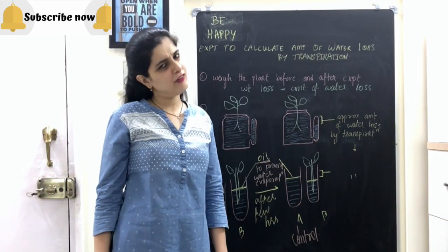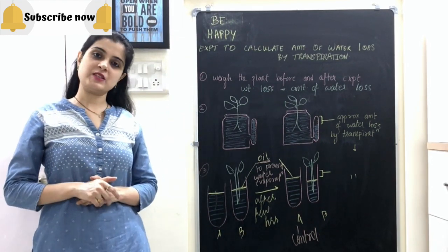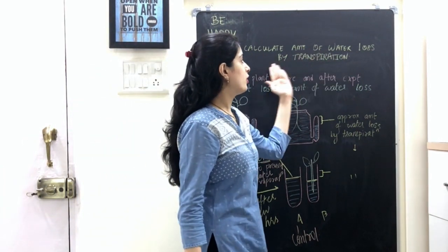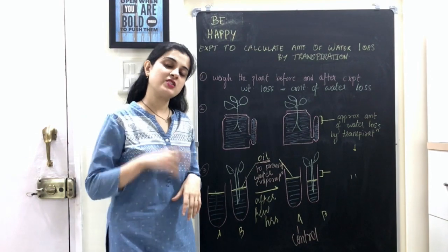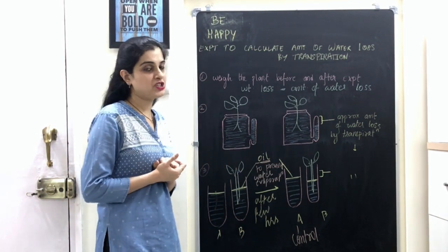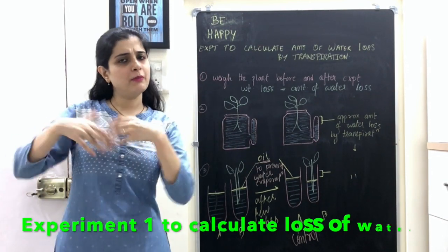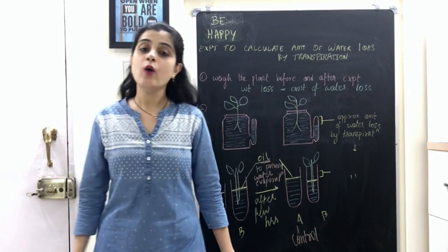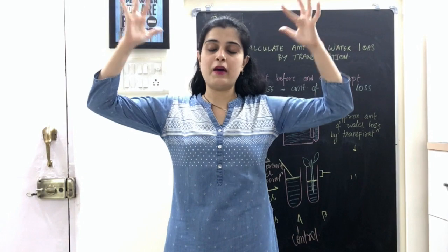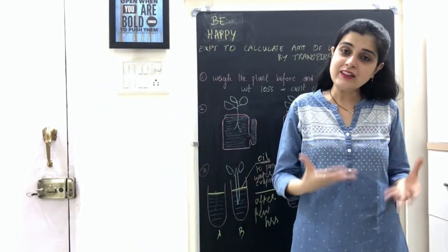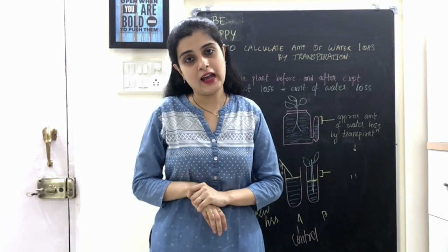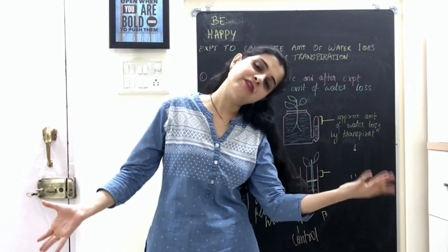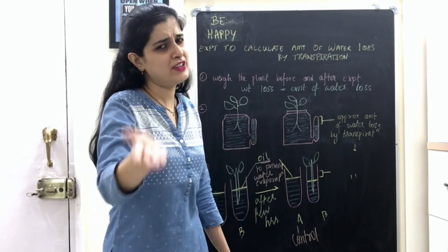Now we are going to do a couple of experiments to calculate the amount of water loss by transpiration. The first method: weigh the plant before and after the experiment. Suppose the weight before is 1 kg. After keeping it in the sun, the plant will transpire and lose approximately 200 g of water. Whatever the weight loss is, that is the amount of water loss by transpiration.